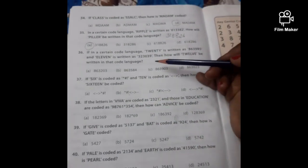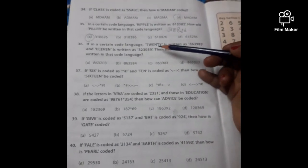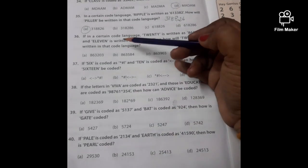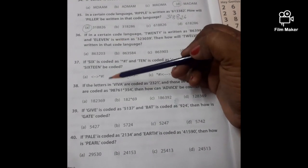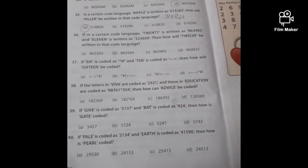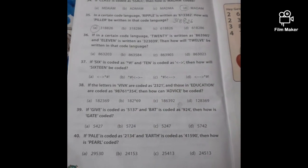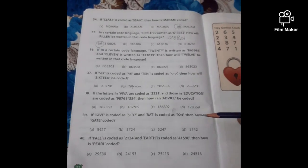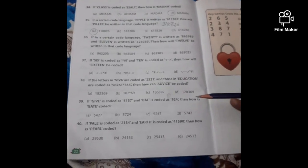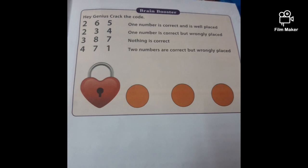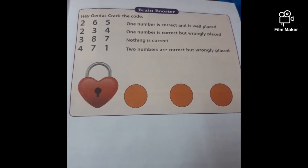These are all number codings. In the same way, you can do questions 36, 37, 38, 39, and 40. That's all about your coding and decoding lesson — we have finished the whole lesson. Thank you, children. Also try the brain booster given in your book.